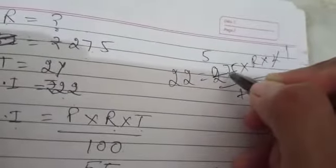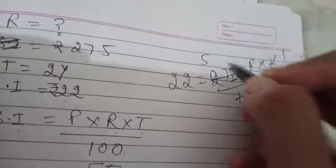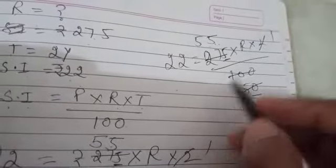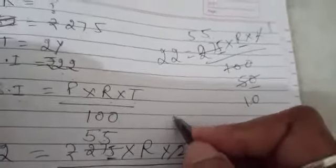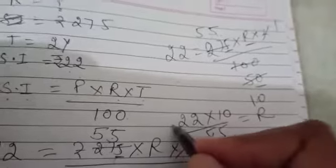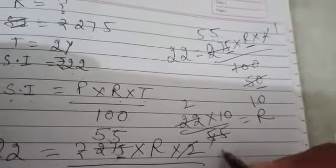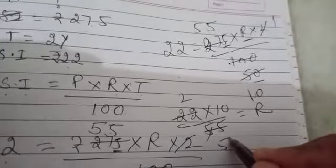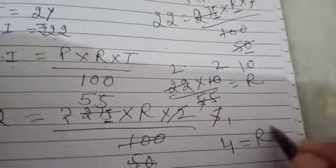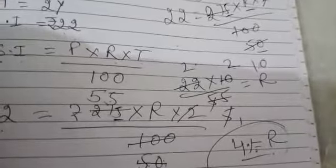It becomes 25, 5 fives are 25. Right. So we have, rather than to cancel it here, it will be easy. So now we will cross multiply the numbers. As we have to find the value of R, it becomes 22 into 10 over 55 is equal to R. 11 to the 22, 11 fives are 55. 5 ones are 5, 5 to the 10, 2 to the 4. Rate will be 4 percent. That is the required answer.